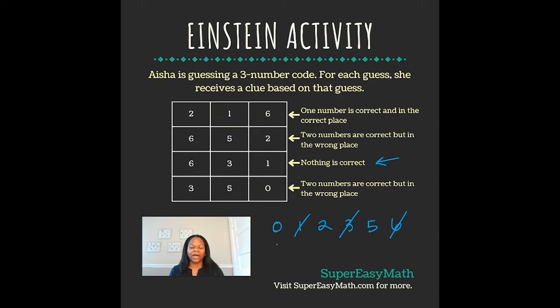We know that our numbers are going to be zero, two, and five, because those are the only numbers that's left. The only thing we need to do is figure out what order they need to be in.